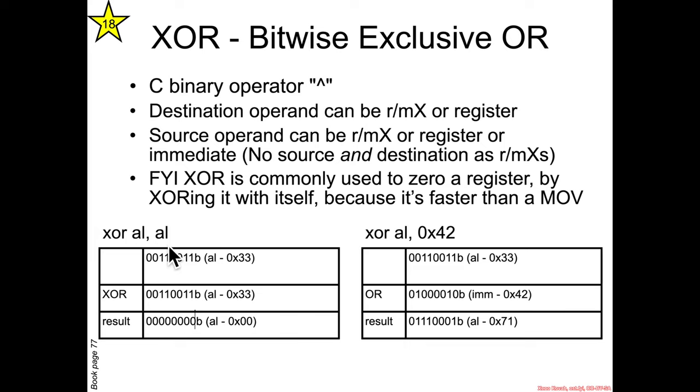Here if we had XOR AL AL then 1 XOR 1 is zero, 1 XOR 1 is zero, 0 XOR 0 is zero and so forth.